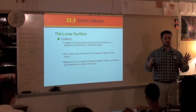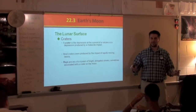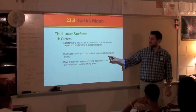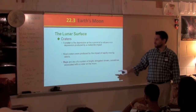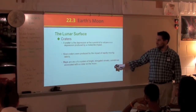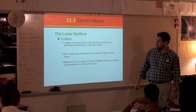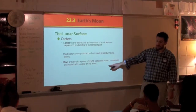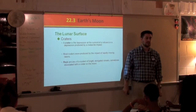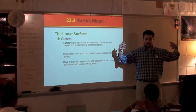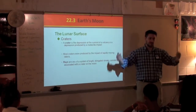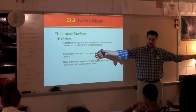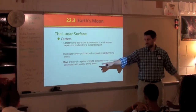We'll talk about craters from volcanoes and calderas more when we get to geology. But for right now, a crater comes from a meteorite impact. Then you have rays — elongated streaks sometimes associated with craters on the moon. A meteorite hits the moon or the earth, and throws up debris that spreads out into streaks called rays.